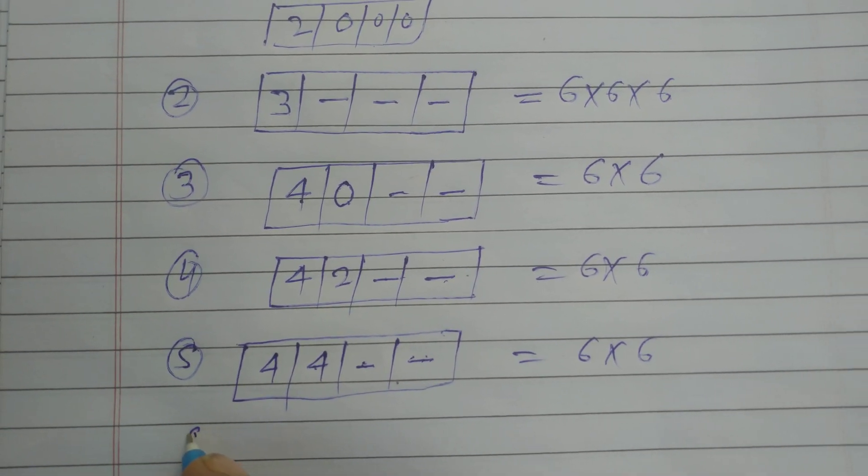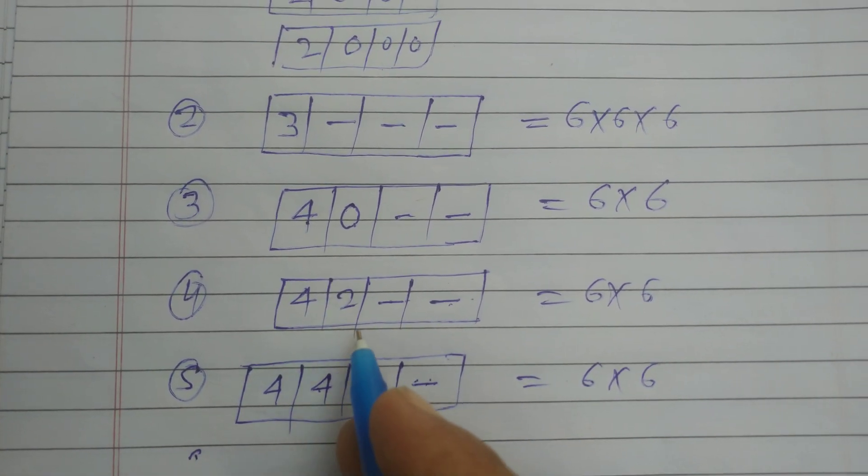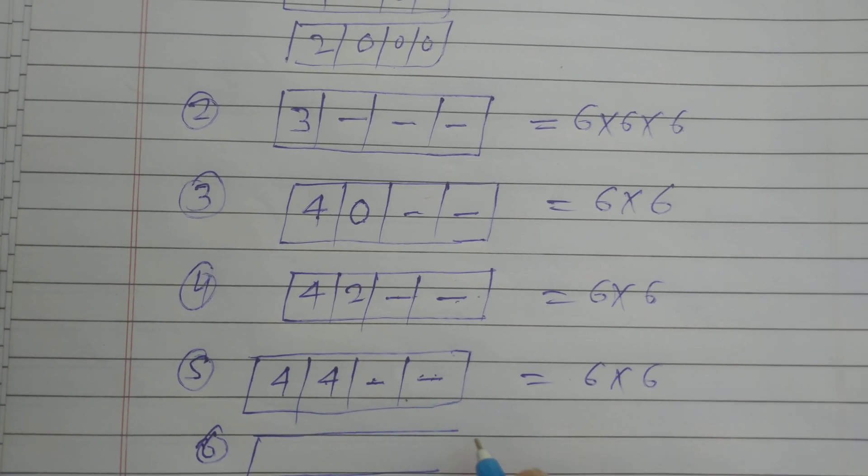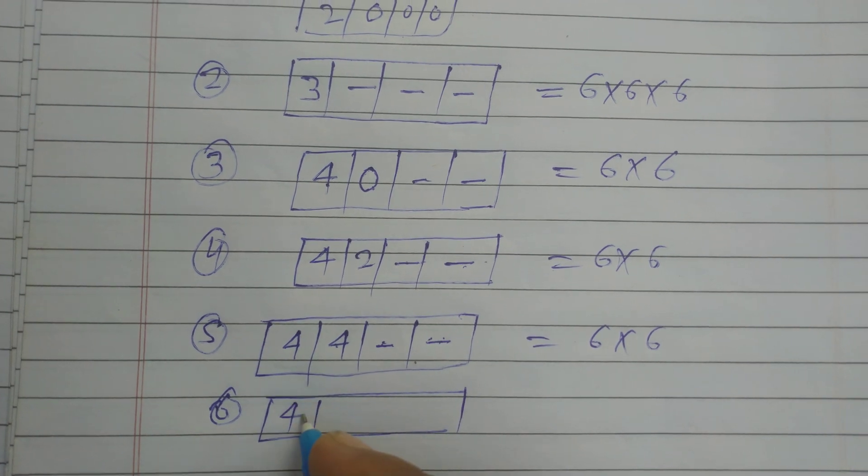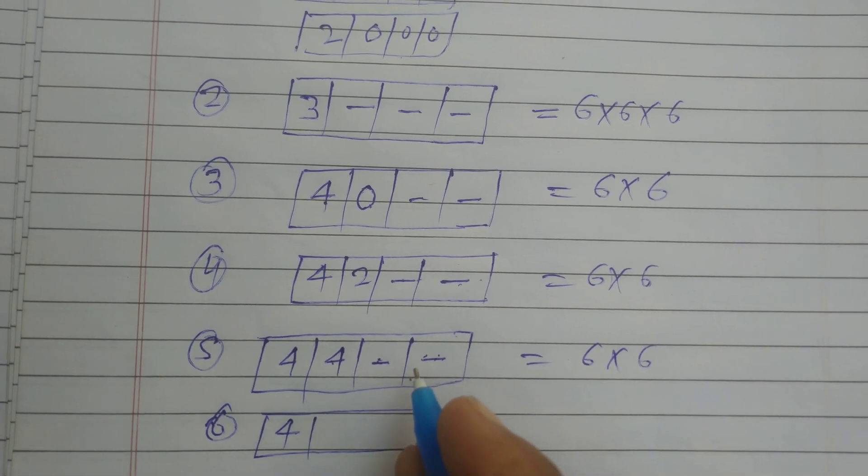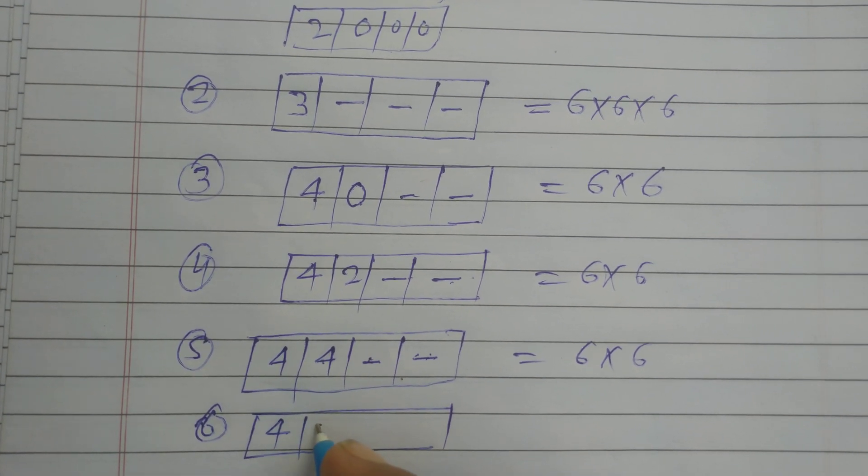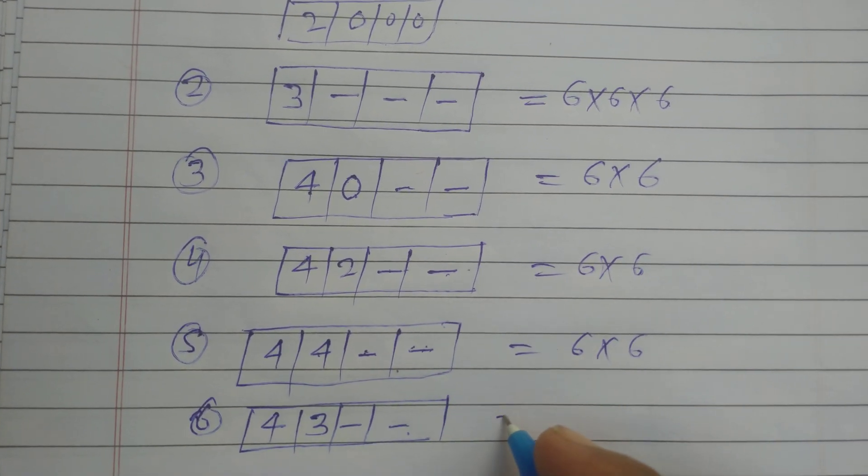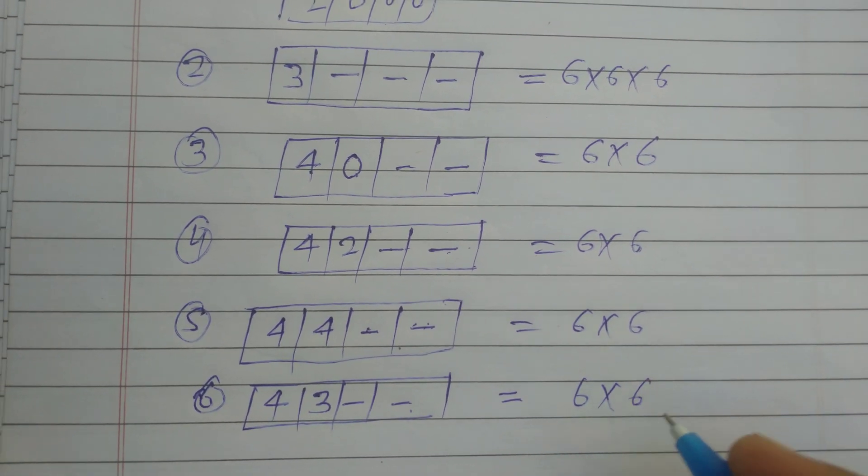And the last condition is when we put 4 at 1000 place and 3 at 100 place, then 1 and 10th place can be filled by 6 into 6 ways.